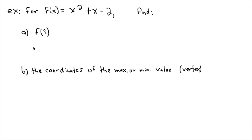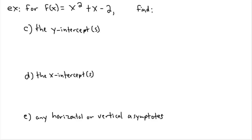As far as doing examples, let's take a look at a specific one. For f of x — remember this is just function notation, no reason to panic — f of x equals x squared plus x minus two. I've devised a couple of questions: first, what is f of three? Then I'm going to ask for the coordinates of the maximum or minimum value, in other words the vertex since this is quadratic. And then the y-intercepts, x-intercepts, and any horizontal or vertical asymptotes.